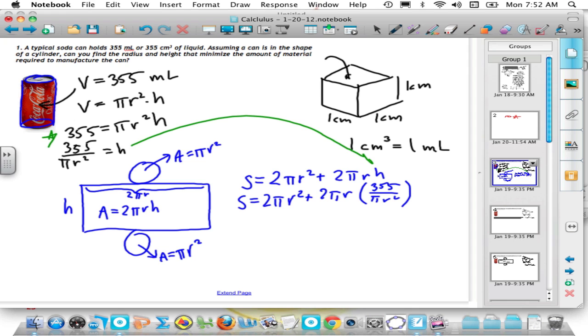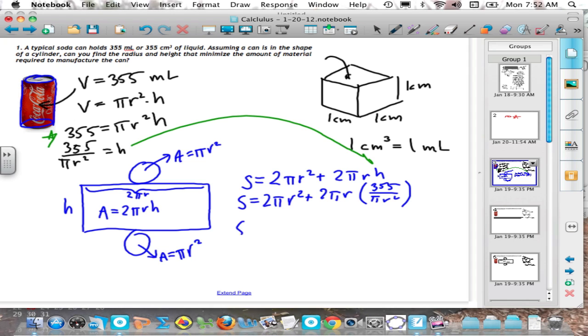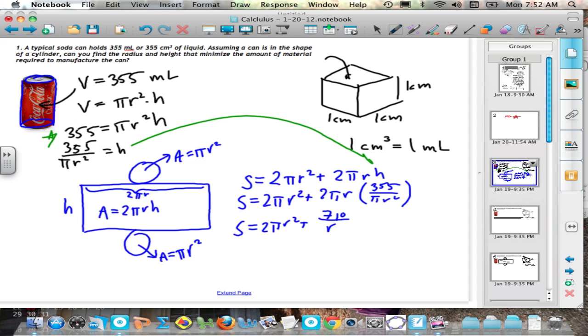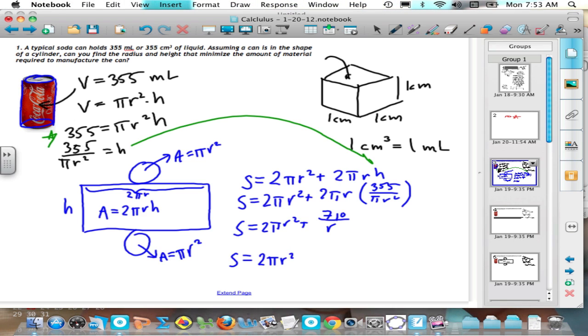All right? Now, let's do a little simplification here. So surface area is going to be 2 pi r squared. Then one of these pi's is going to cancel and one of the r's is going to cancel. The 2 times 355 is 710, and you're going to have one r in the denominator. So I'm going to have surface area is 2 pi r squared plus 710 r to the negative 1.